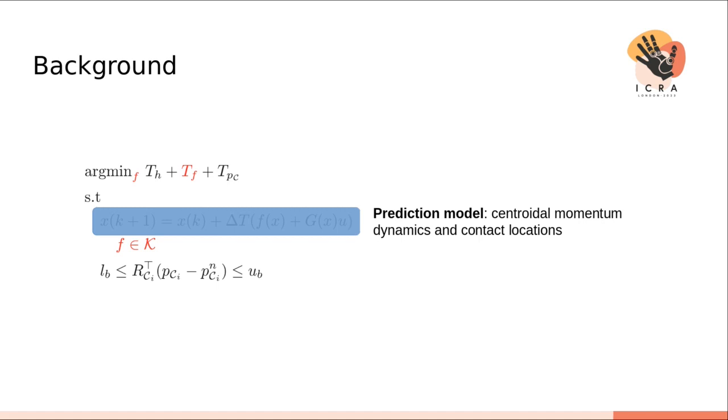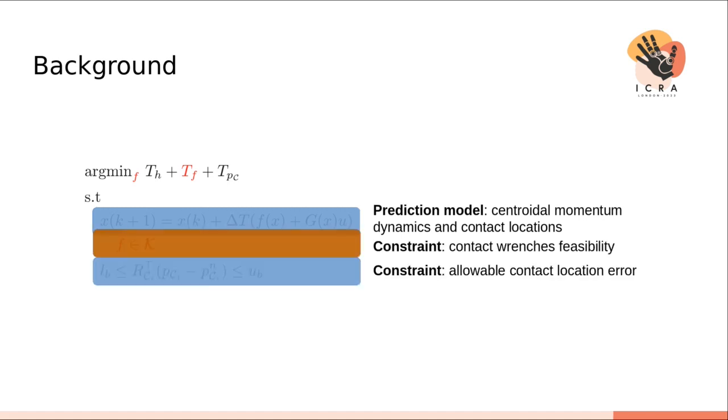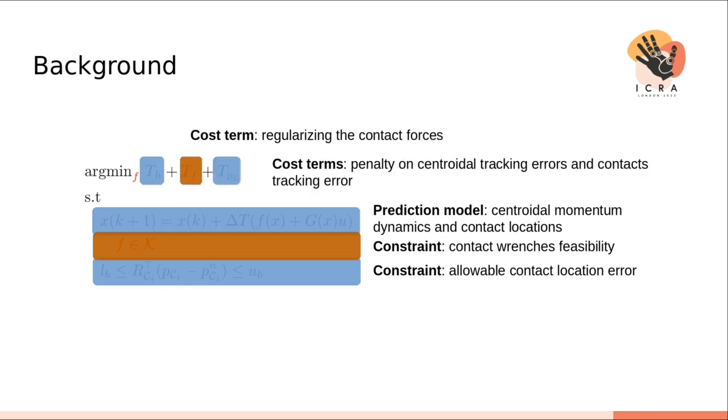In addition, two sets of constraints, one highlighted in red, are included. The first is a constraint on the contact forces feasibility. The second specifies the maximum allowable contact location error. The cost function penalizes the tracking error while also regularizing the contact forces.